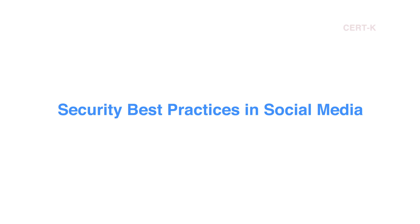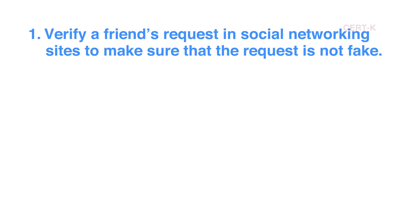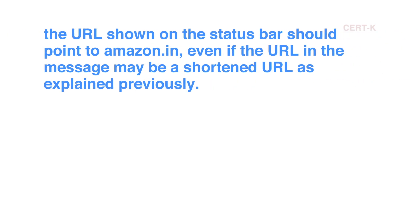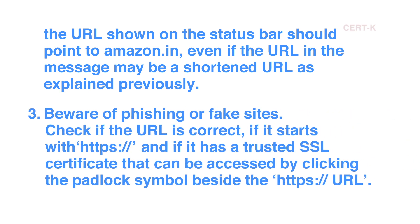Security Best Practices in Social Media. Verify friend requests in social networking sites to make sure the request is not fake. Be wary of clicking links in messages that look suspicious. Move your mouse over the link without clicking and check the URL that appears in the status bar at the bottom of the browser window. Do not proceed if the URL does not start with the website address you expect. Beware of phishing or fake sites — check if the URL is correct, if it starts with HTTPS, and if it has a trusted SSL certificate, which can be verified by clicking the padlock symbol beside the HTTPS URL.